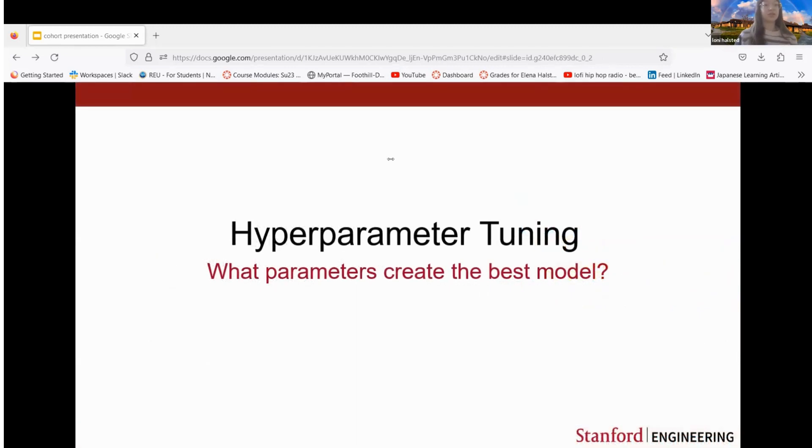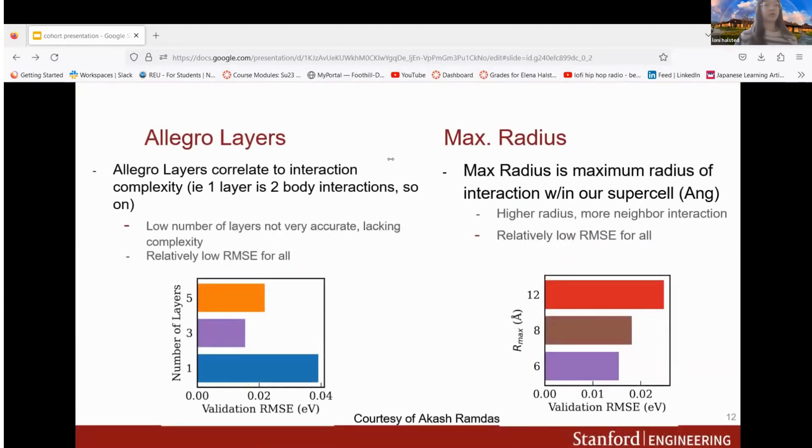In hyperparameter tuning these are two different hyperparameters we paid attention to. First, the Allegro layers, which correlates to the interaction complexity. One layer would be two atomic interactions, two layers would be three atoms interacting, and so on. Overall we saw low root mean squared error for all of these. Then for max radius, this is the maximum radius of interaction within the supercell. Similarly there was a relatively low RMSE for all of them.